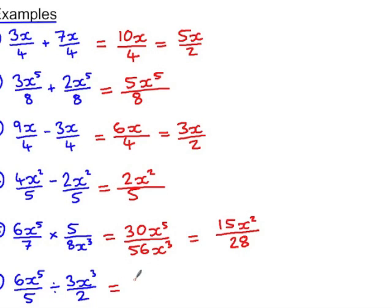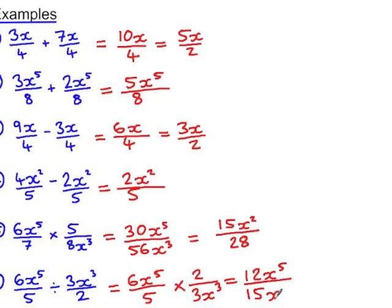And finally, remember that dividing by a fraction is the same as multiplying by the reciprocal of the fraction. 6x to the power of 5 times 2, that's 12x to the power of 5. And 5 times 3x cubed is 15x cubed. Both of these are divisible by 3x cubed. So that's 4x squared all over 5.